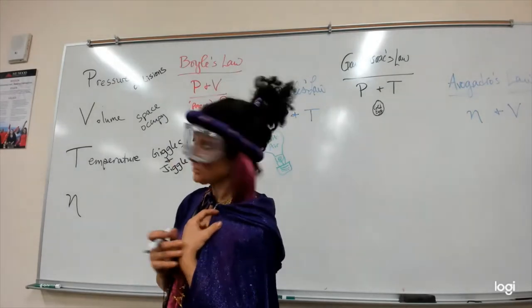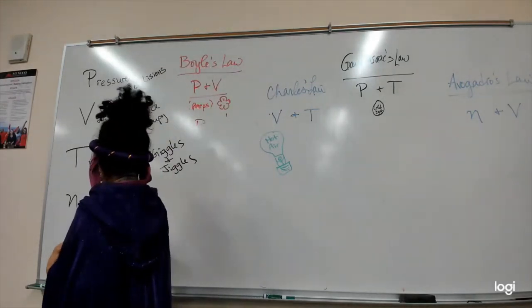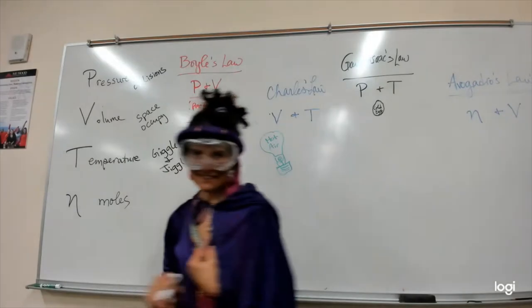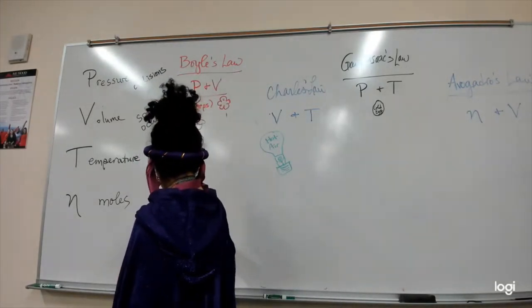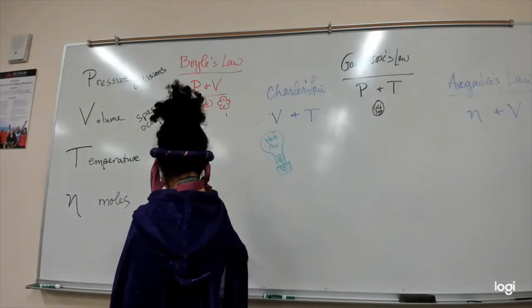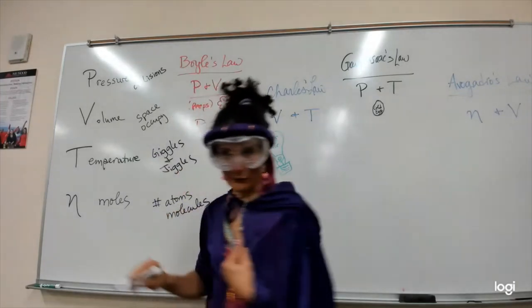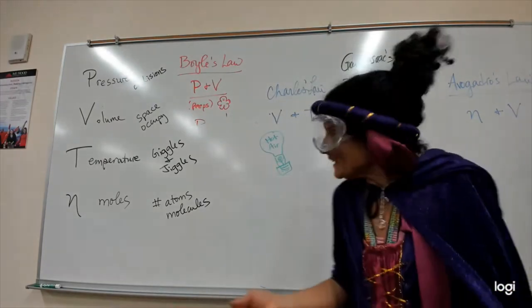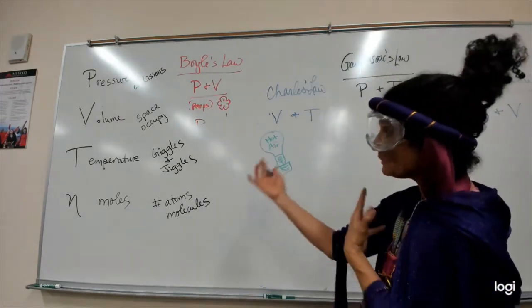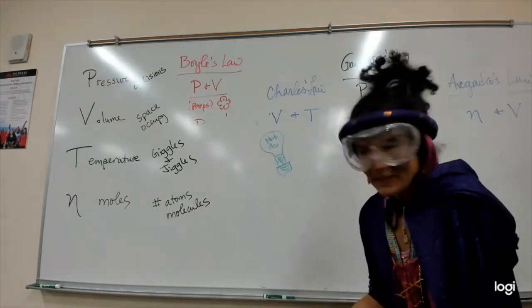N is for moles. Because it is chemistry. Moles is the study of the number of atoms or molecules. When we get to the math in class, we're going to use Avogadro's number again. It is a way to relate pressure, volume, temperature with Avogadro's number.